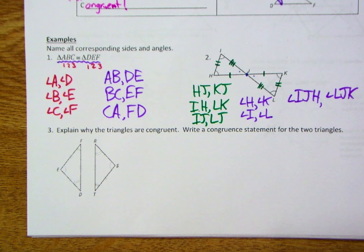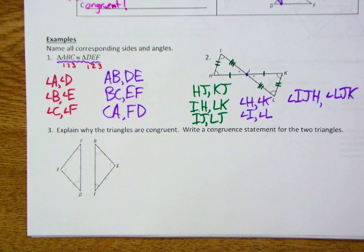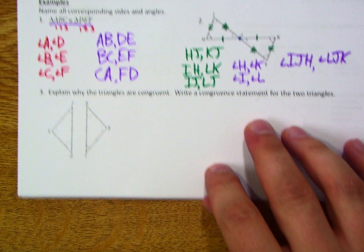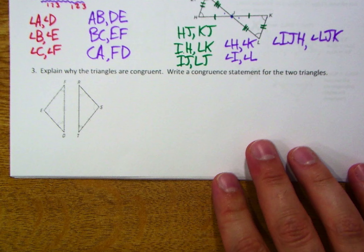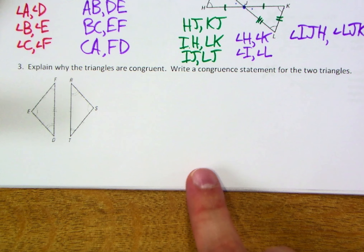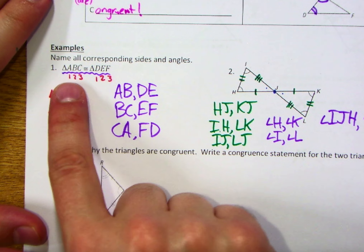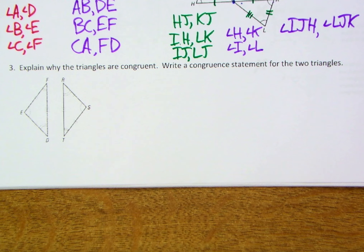That goes back to those naming rules. But again, three corresponding sides, three corresponding angles. Down below, in your own words, explain why these triangles are congruent — look carefully at the markings — and then try to write your own congruent statement, making sure to match your pieces carefully. Go ahead and pause the video.